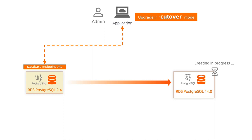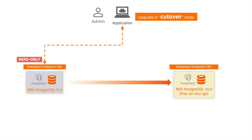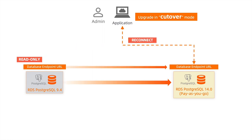When running the upgrade procedure, the new target POS SQL database will be created first, while the original database is still working, and the database content and configuration is migrated to the new database instance. When the target database is ready, the original database will be put into read-only mode, and the DNS will be switched over to the new database instance endpoint URL.